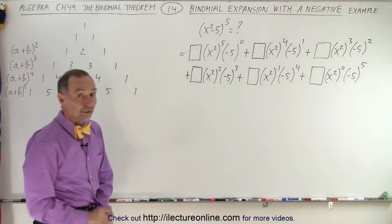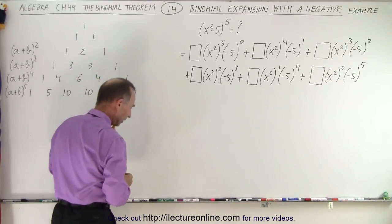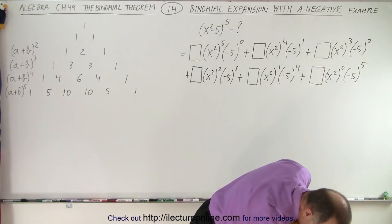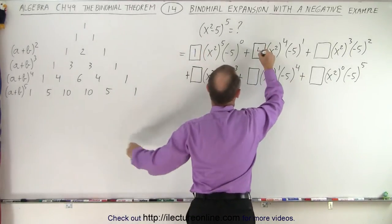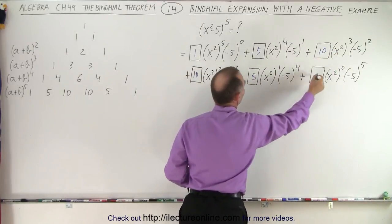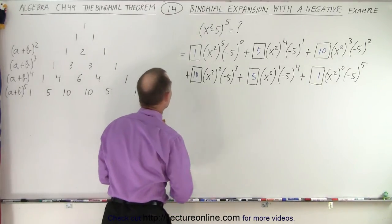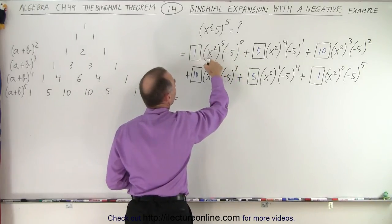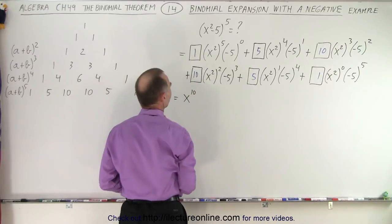Now we can go ahead and take the six numerical coefficients from Pascal's triangle and plug them in using a different color. We're going to plug in the numbers 1, 5, 10, 10, 5, and 1. Now we can work out the details. Anything raised to the zero power is always 1, and x squared to the fifth power is x to the 10th, so our first term is x to the 10th.